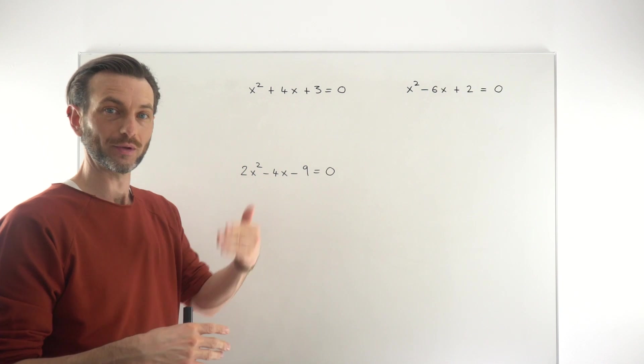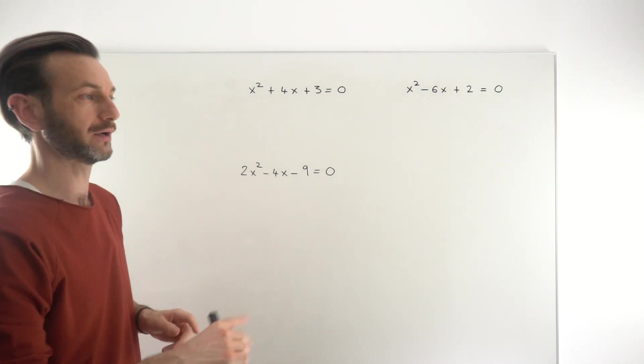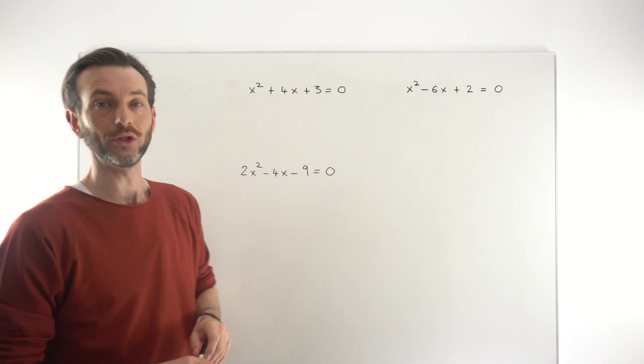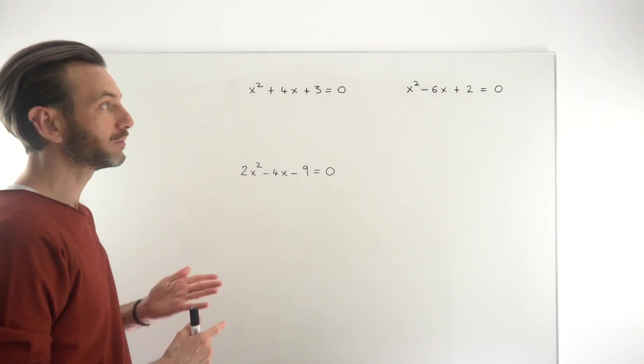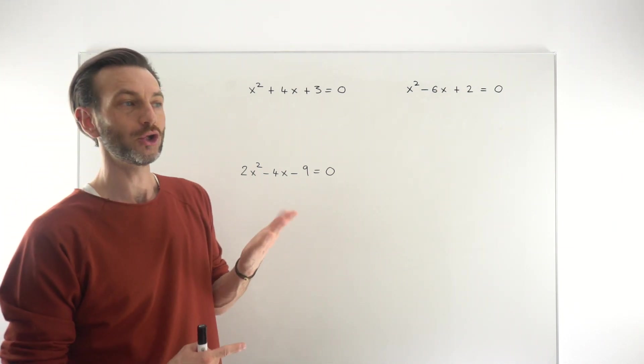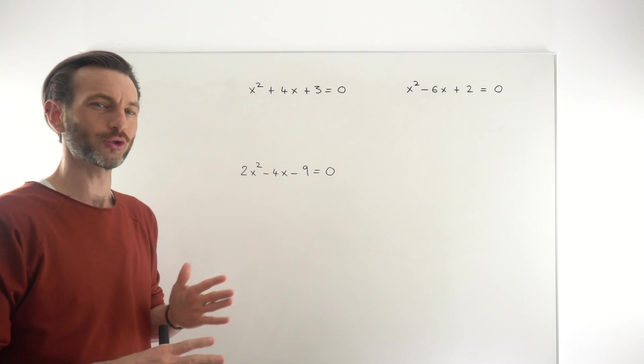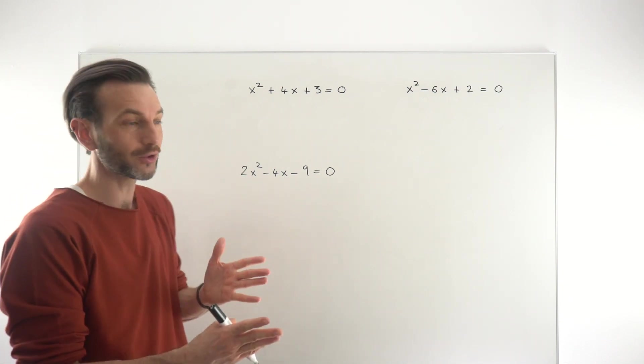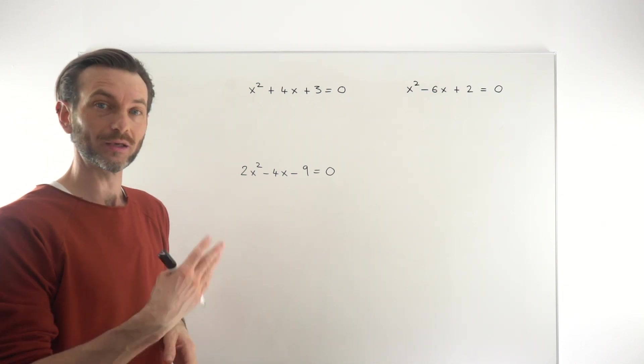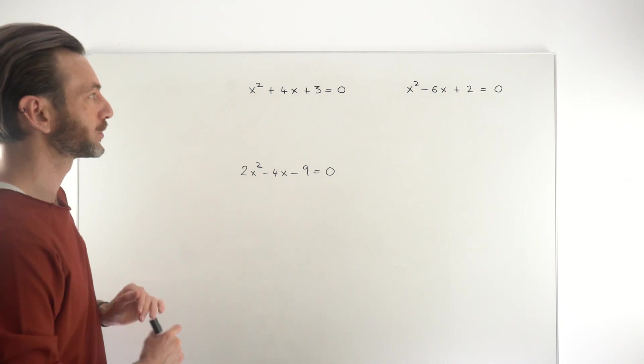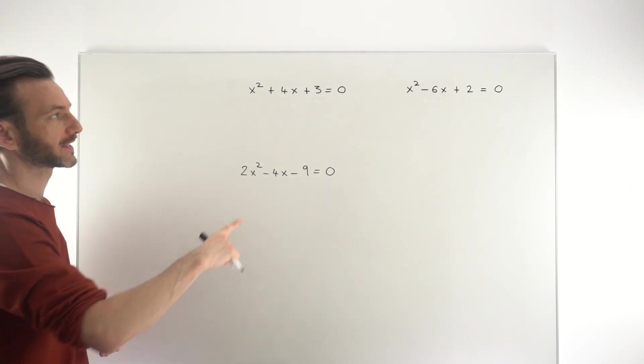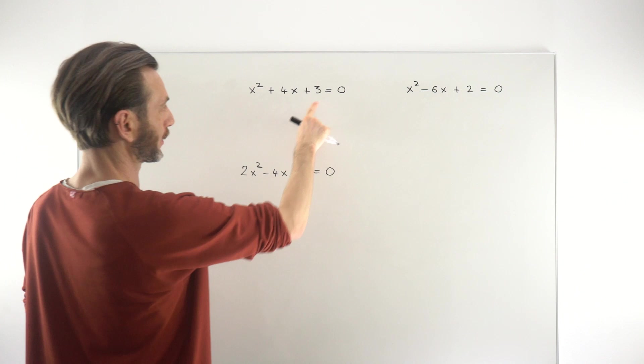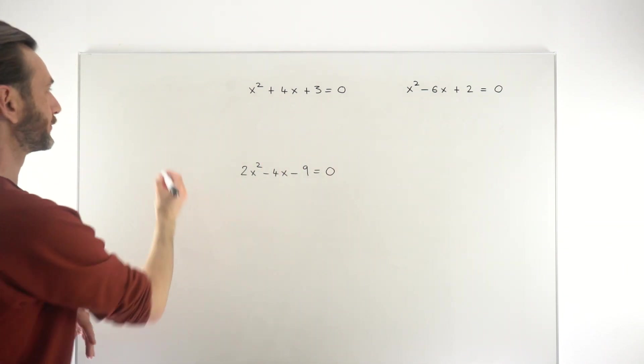But in any of those scenarios it either factorizes or it doesn't factorize. If it doesn't factorize you can use the quadratic formula, but a more numerical or algebraic version of the quadratic formula, which is essentially the same technique, is to use the completed square form. So remember that completing the square is a technique that takes a quadratic expression and rewrites it in a different format.